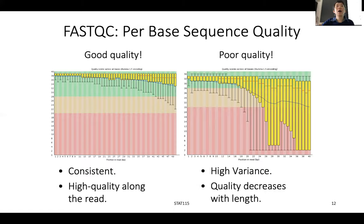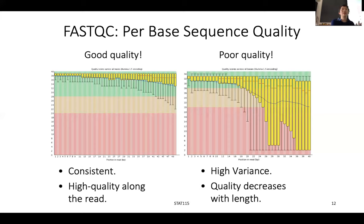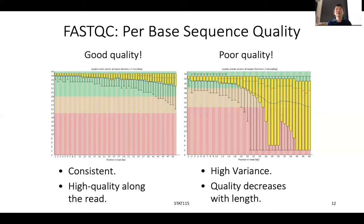How does Illumina calculate the quality from imaging? For example, if the spot is very big and very clear with only one color and no different color overlapping with each other, they calculate this. The detailed algorithm is uncertain, but they probably tried a lot of different tests to calibrate the read quality. By the time you run the machine and get the data, it's already calculated.